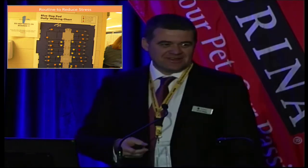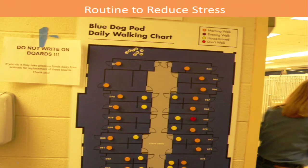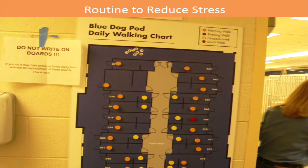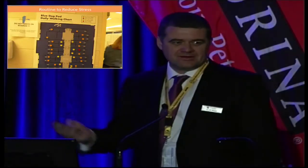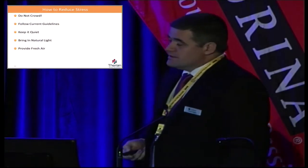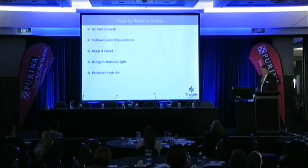Oregon Humane Society — simple things like having a routine are so important to ensuring dogs, cats, and other animals know what to expect. Oregon Humane Society uses different colors to help volunteers and staff in walking dogs — they have a dog walking program every day. It's a really effective visual way of doing it. I love visual systems — give someone a written procedure and they won't follow it; give them something visual and they tend to follow it. Reducing stress: don't crowd, don't have a shelter bursting at the seams.